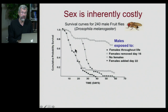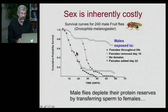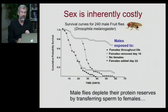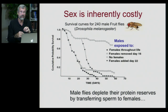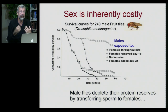So they're making a direct trade-off between reproduction and survival. And in flies, this is obvious because there's only a certain amount of protein reserves available to each male. Every time a male mates, he transfers some of that protein in the form of sperm to the female, so he's inevitably killing himself by inseminating the female.